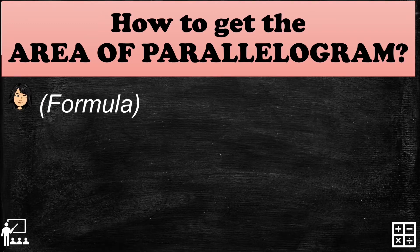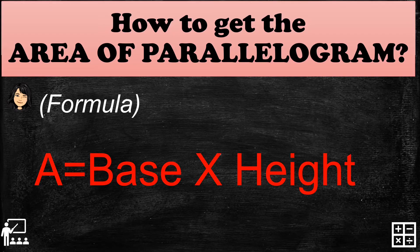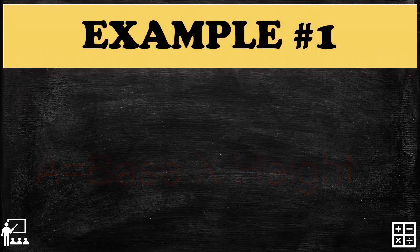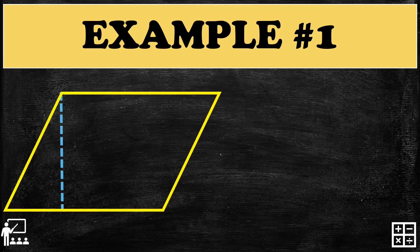Let's find how to get the area of a parallelogram using the formula. The formula is: A equals base times height. Again, the base is always at the bottom, and the height is the line drawn from the vertex perpendicular to the base.